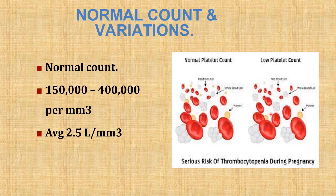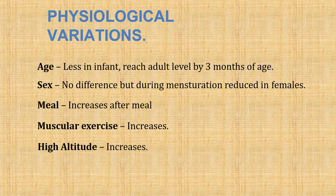Normal platelet count is 1.5 to 4 lakhs per mm³, averaging 2.5 lakhs per mm³. Physiological variations: in infants the number is less, reaching adult level by three months of age; no sex difference but during menstruation the count is reduced in females; after meals the count increases; after exercise the count increases; and at high altitude the count also increases.